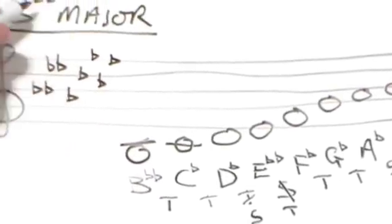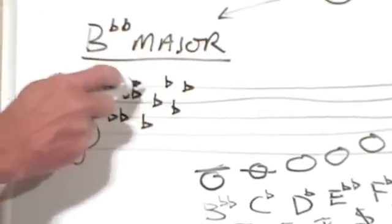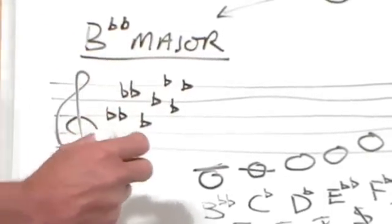And we can say that the key of B double flat major has one, two, three, four, five, six, seven, eight, nine flats in the key signature.